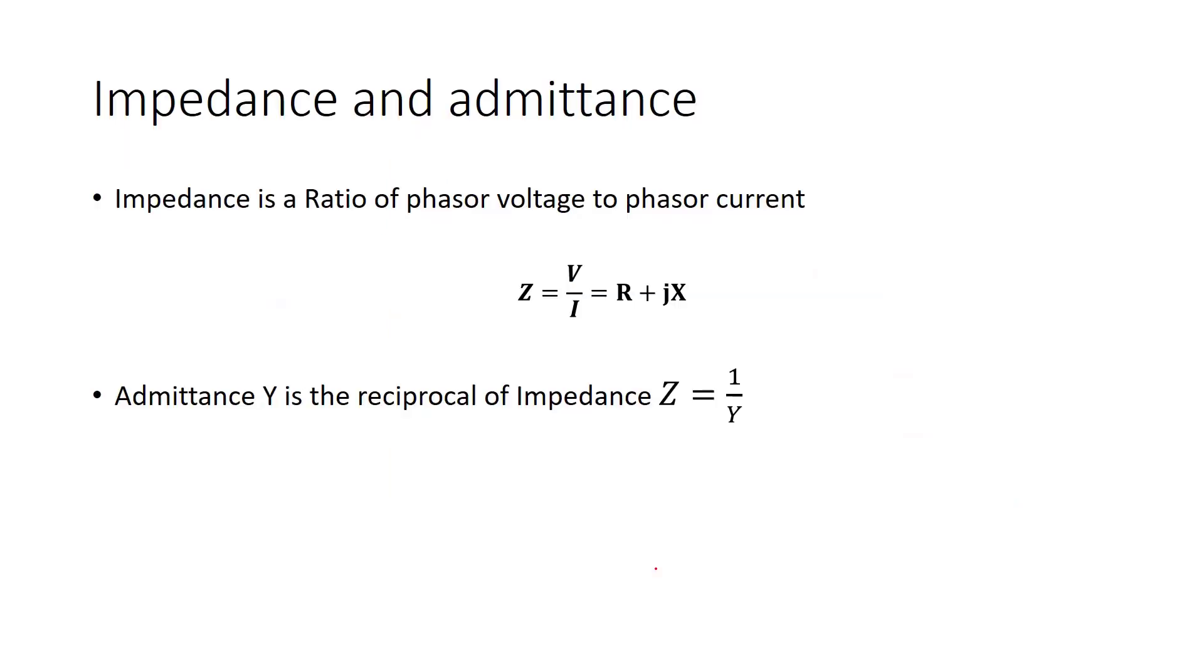Let's talk about impedance and admittance. What is impedance? It's a ratio of phasor voltage to phasor current this time. It's kind of very close to the actually resistance. So in resistance, we say that resistance R is equal to V over I.